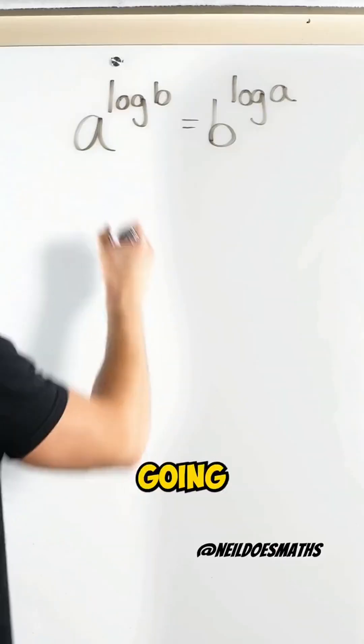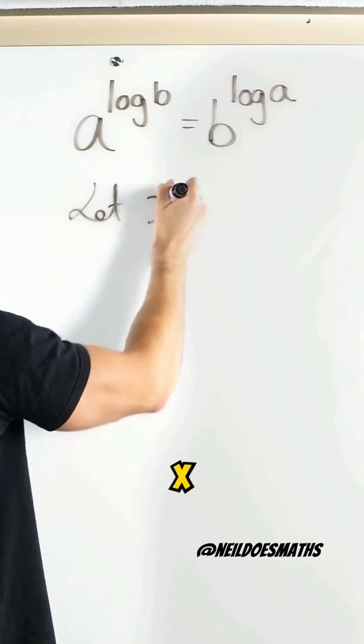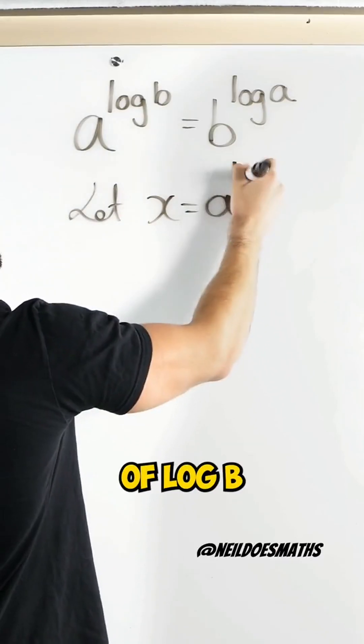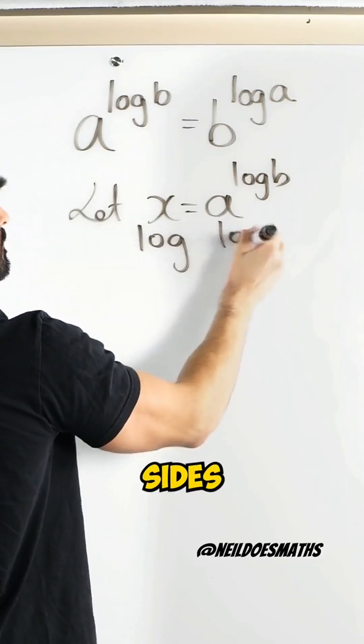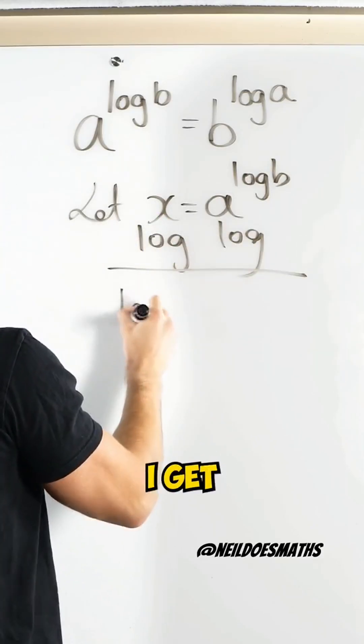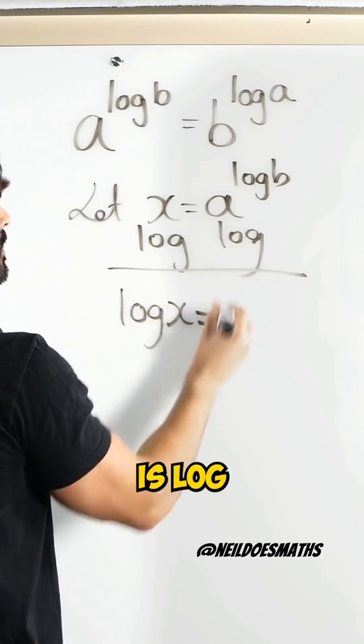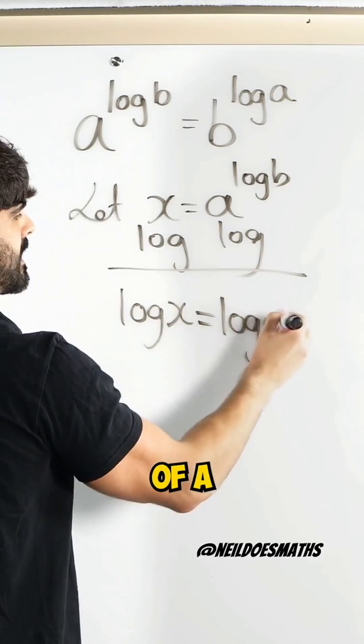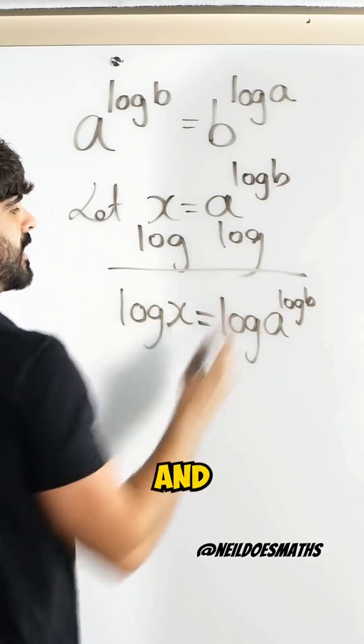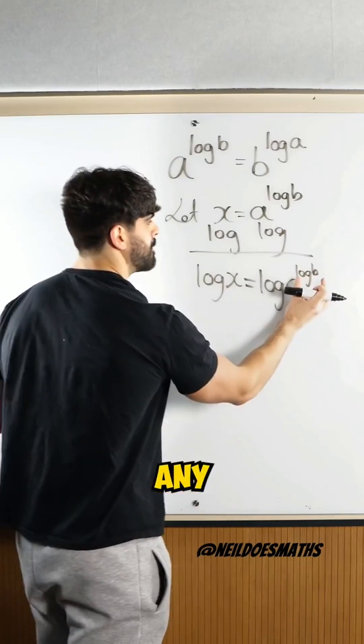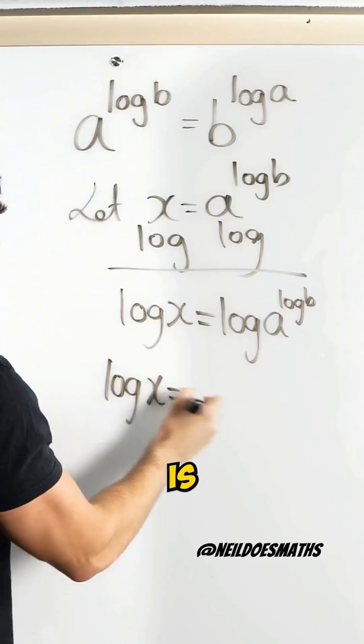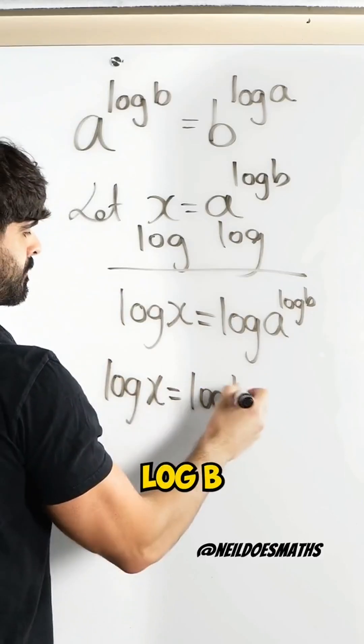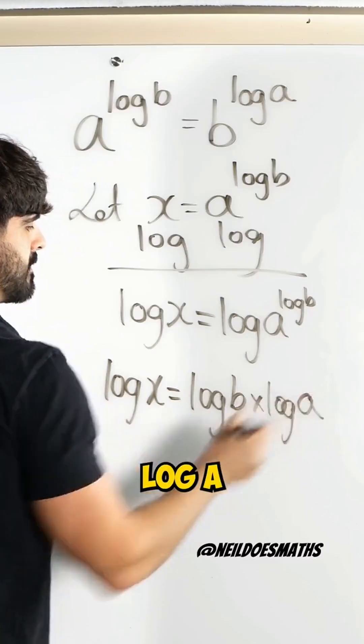What I'm going to do is let x equal a to the power of log b. Then I'm going to log both sides. When I log both sides I get log x is log of a to the power of log b. And using our log rules, any power of a log we can bring down. And we get log x is log b times log a.